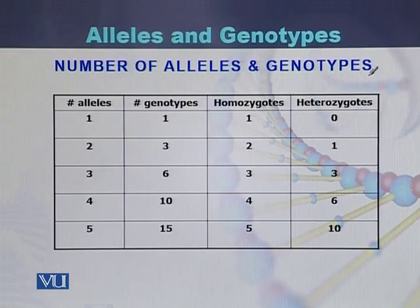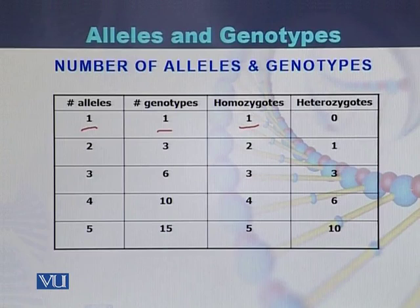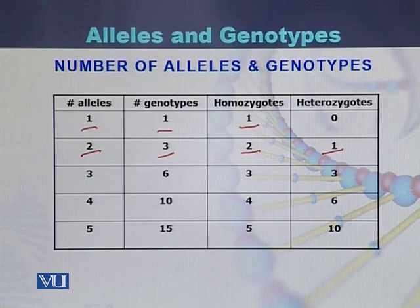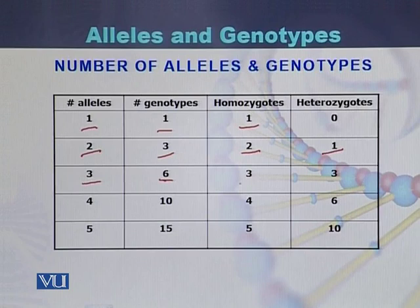From this diagram we can see that if a gene contains one allele, there will be only one genotype, which will be homozygous. If a gene contains two alleles, there will be three total genotypes: two homozygous and one heterozygous. If a gene has three different alleles, the number of genotypes will be six — three homozygous and three heterozygous.